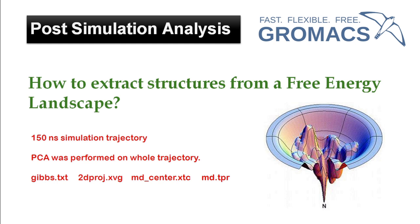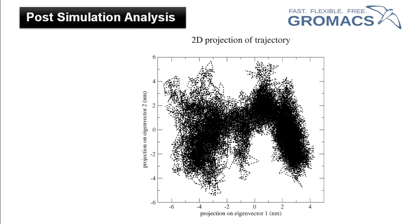This is the 2D projection of the first and second principal components — the 2D projection .xvg file — which I have plotted using xmgrace. This is the conformational space of the protein. These dots are the protein conformations. This is a 2D plot because in the x and y axes two principal components have been used. If we express these conformations in terms of their energy state, that means the Gibbs free energy, this plot can be converted into a three-dimensional free energy landscape.